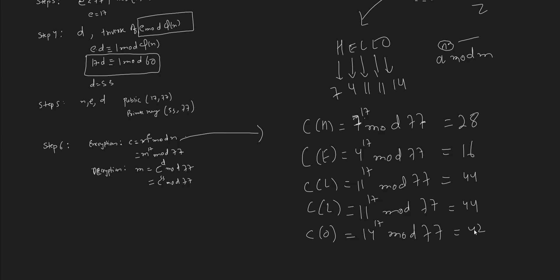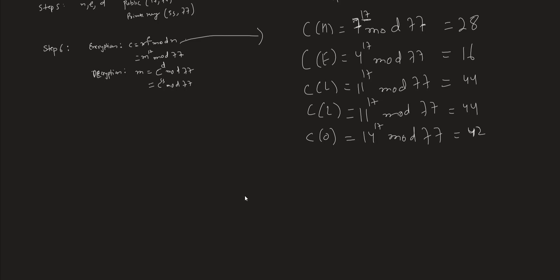If you don't understand how these were calculated, you can look at previous videos where we discussed in detail how to represent these powers using powers of 2 to compute values of the form a raised to the power n mod m. The ciphertext that appears on the channel when Alice sends the message to Bob is: 28, 16, 44, 44, and 42.